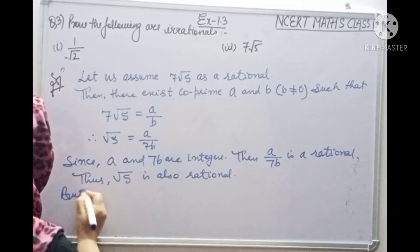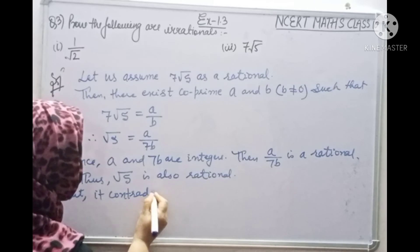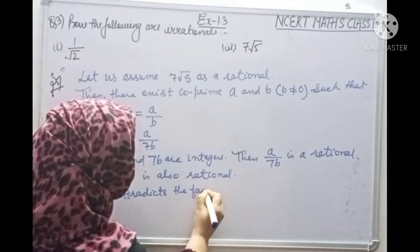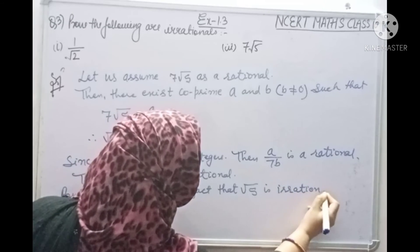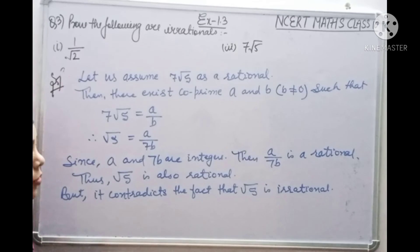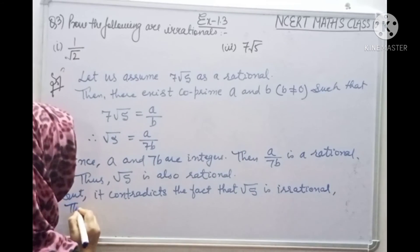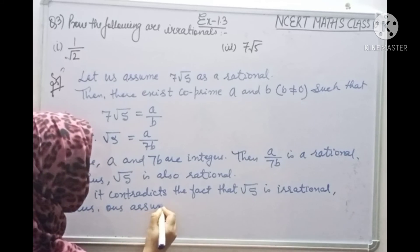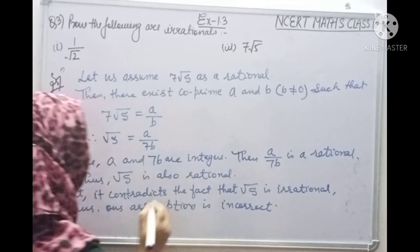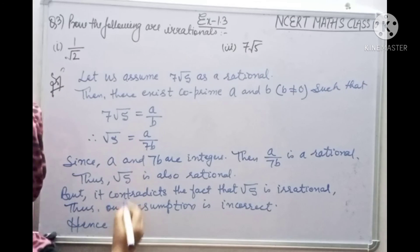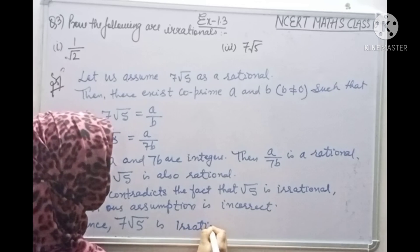But this contradicts the fact that root 5 is irrational. Therefore our assumption is incorrect. Hence we can say that 7 root 5 is irrational.